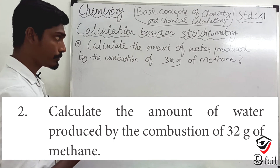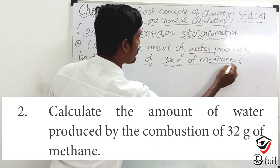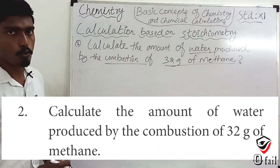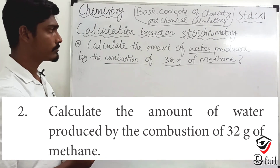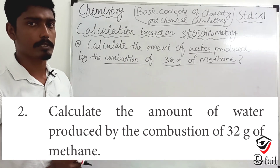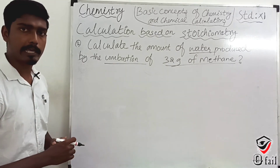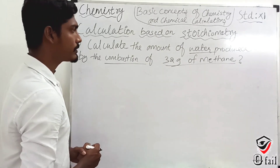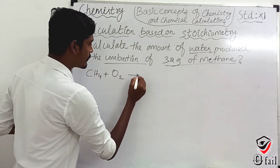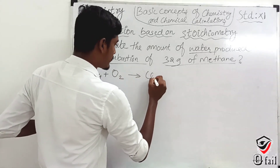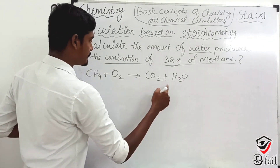Next question: calculate the amount of water produced when 32 grams of methane undergoes combustion. The methane combustion reaction: methane reacts with oxygen to release carbon dioxide and water. Let's balance this equation.